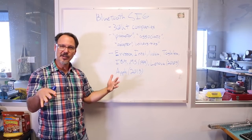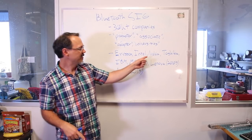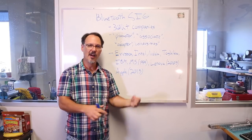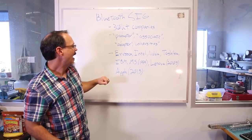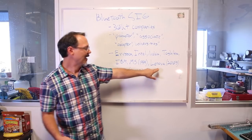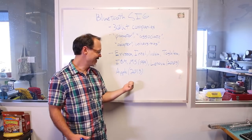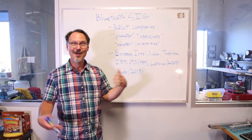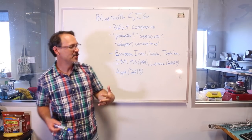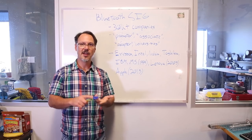Promoter, the core companies, the ones that were originally on board. Ericsson, Intel, Nokia, Toshiba, and IBM. They were the original gangsters. And some of the later core members. Microsoft came on in 1999. Lenovo came on in 2005. And then Apple, 2015. They were holding out. I don't know why. Probably something to do with money, if I had to guess. Anyway, the Bluetooth Special Industries Group now manages the Bluetooth standard. Both Classic and BLE.